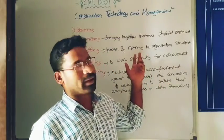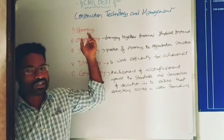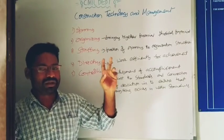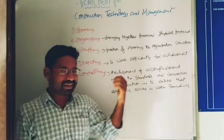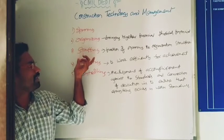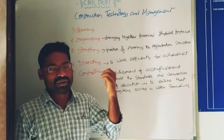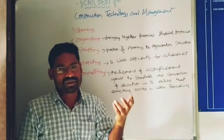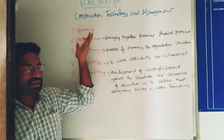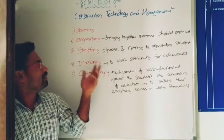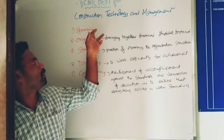As a continuation, we already covered project planning in detail. Now, as a project manager, what are the required qualities? A project manager has to plan, organize, staff, direct, and control. We already covered project planning, and now we move on to organizing, staffing, directing, and controlling.